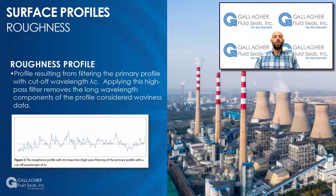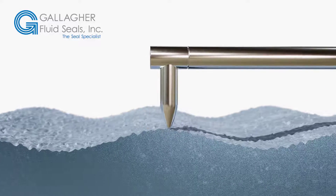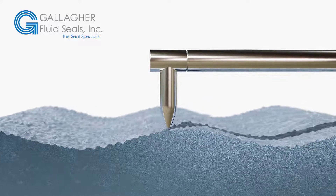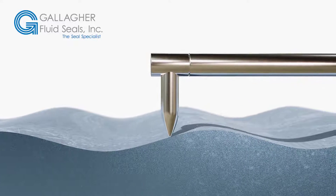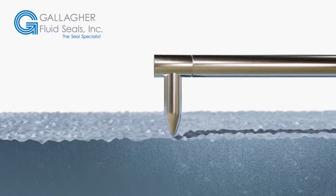The roughness profile is generated by filtering the primary profile with cutoff wavelength lambda c. Applying this high-pass filter removes the long wavelength components of the profile considered waviness data. The roughness profile, as seen in the below depiction, is the profile we are most interested in with respect to characterizing a surface that directly correlates to seal performance. Also seen in the below image is the mean line, which is established once appropriate upper and lower cutoff filters have been applied to the measured profile and is the flat reference line from which the profile deviations are quantified. In the first animation, you can see that our measured profile contains both long wavelength waviness and short wavelength roughness components. The next animation portrays the filtered waviness profile, and the final animation depicts the filtered roughness profile from our measured profile.